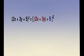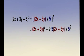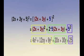We have quantity 2x plus 3y plus 5 all raised to the second power equals quantity 2x plus 3y raised to the second power plus 2 times 5 times quantity 2x plus 3y plus 5 squared equals 4x squared plus 12xy plus 9y squared plus 20x plus 30y plus 25.